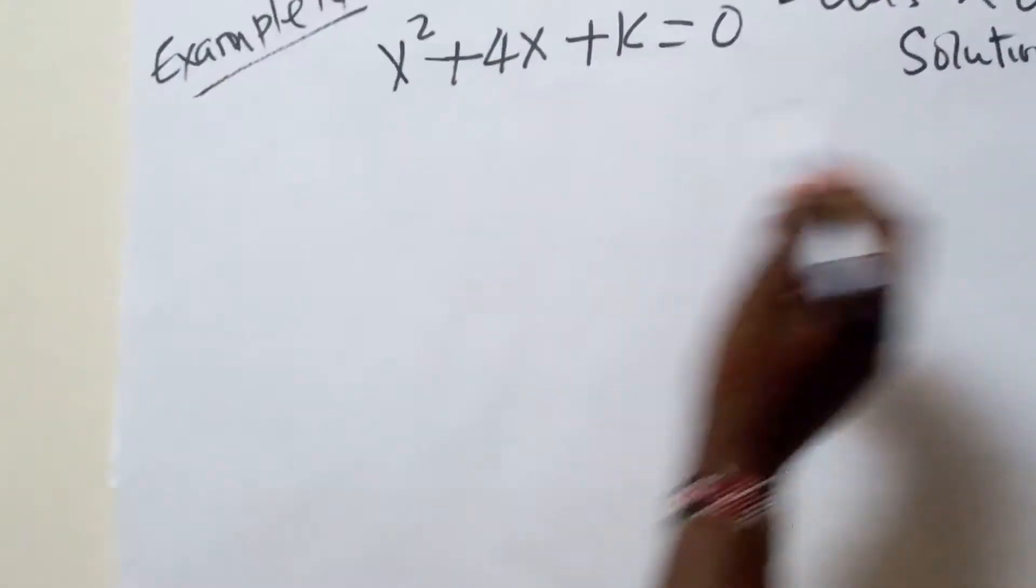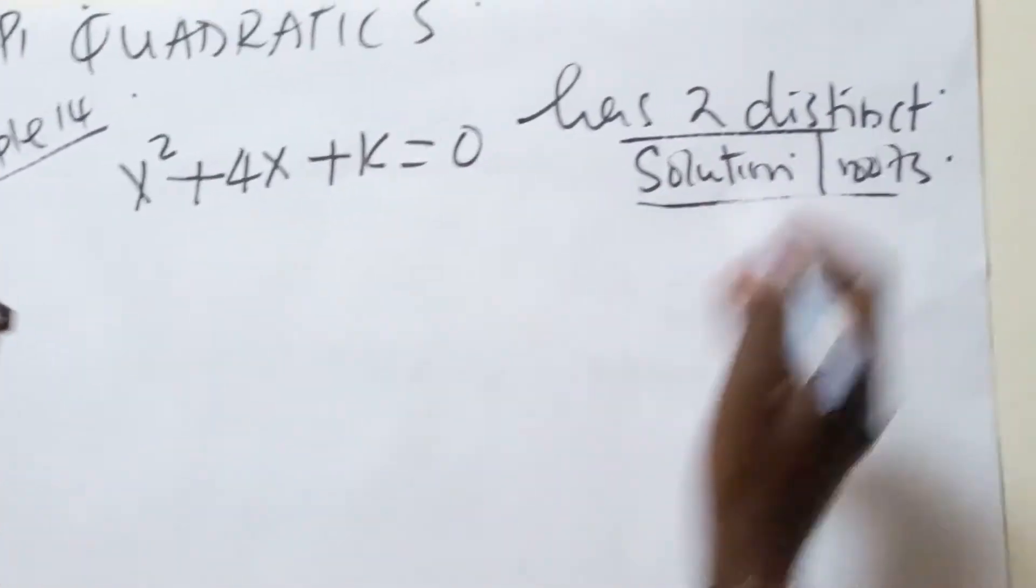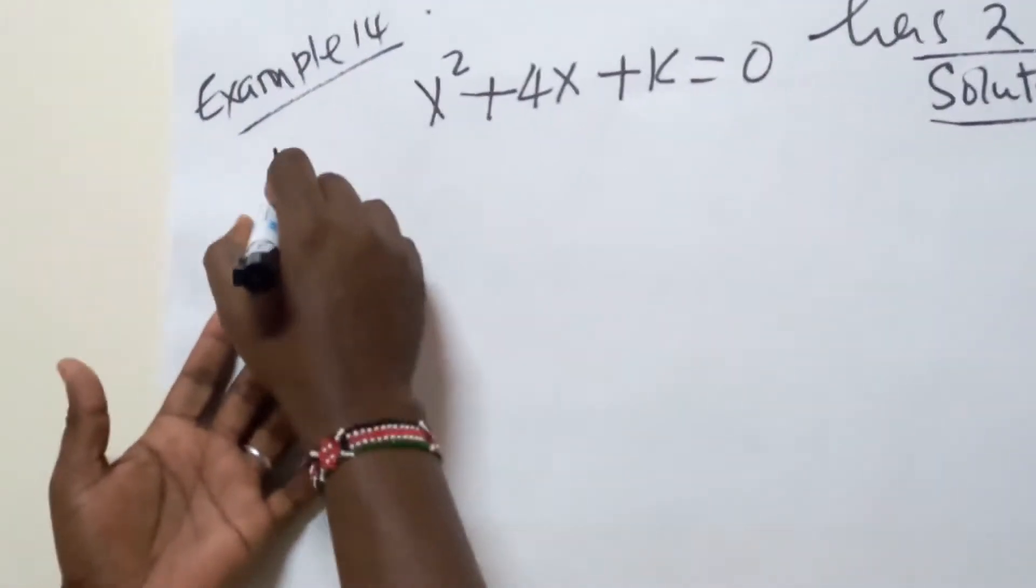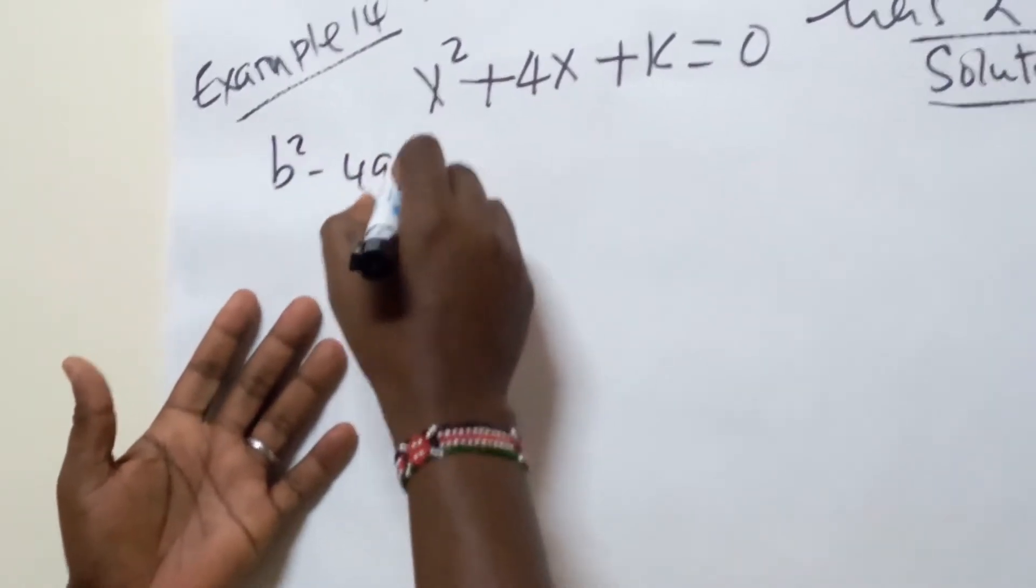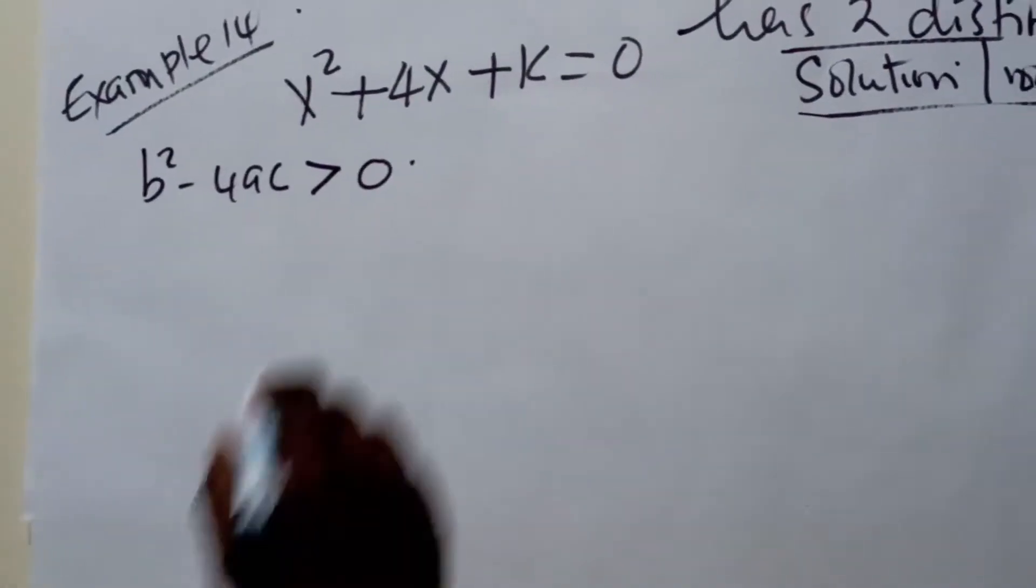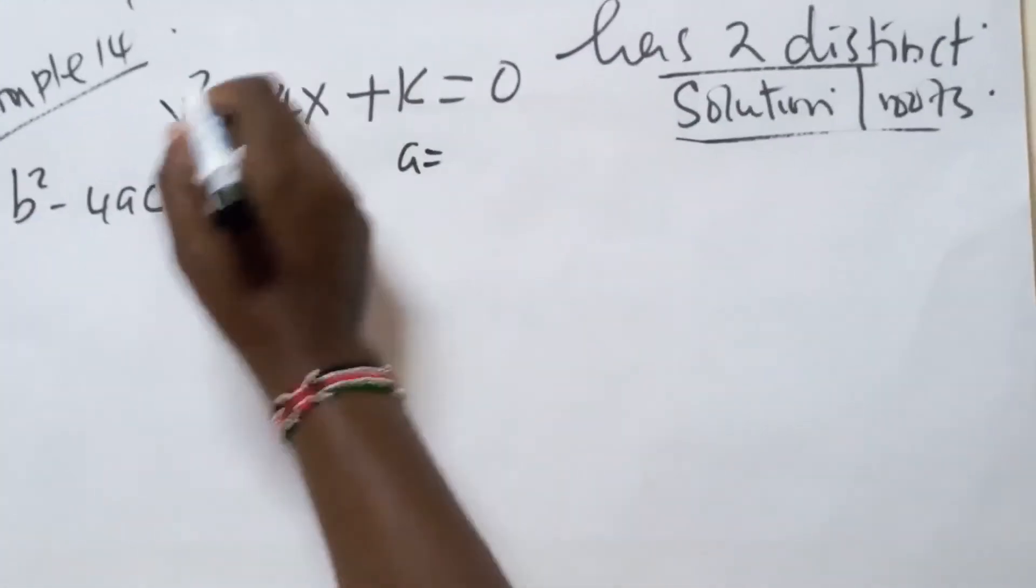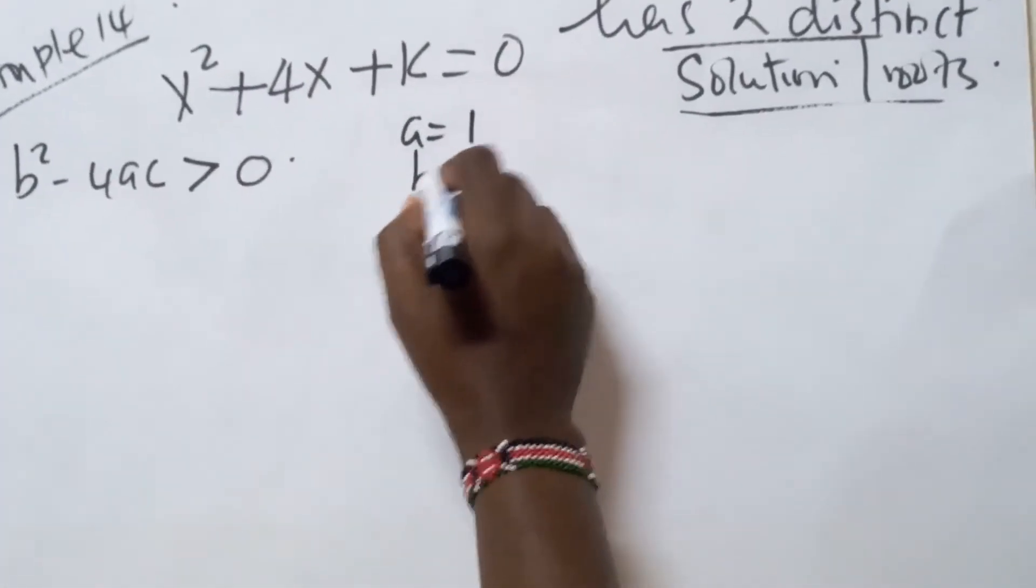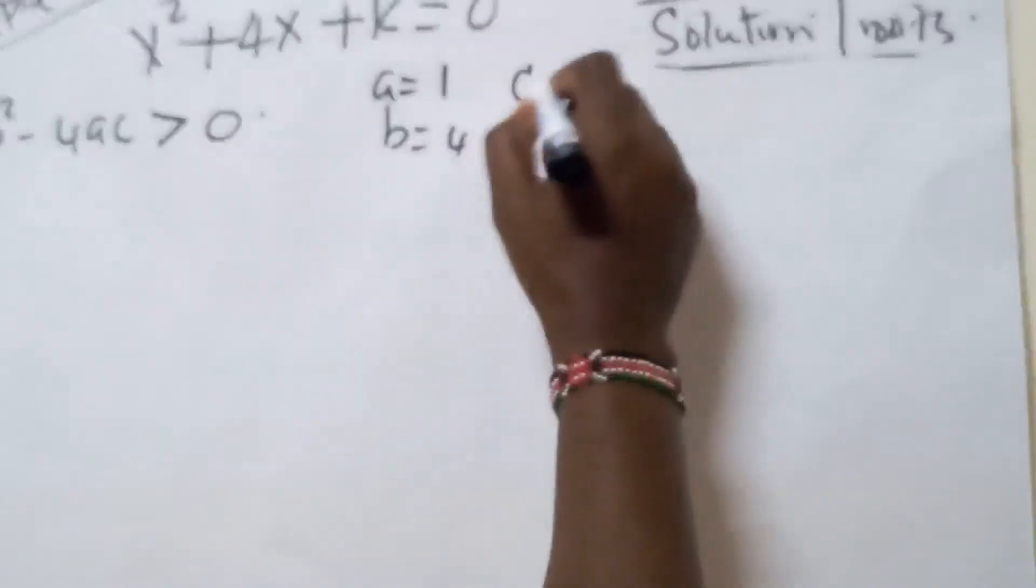What is our discriminant? For this condition to be fulfilled, the discriminant b squared minus 4ac has to be greater than 0. And you can already see our a in this particular equation is 1, our b is 4, and our c is k.